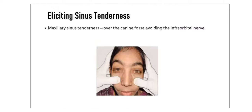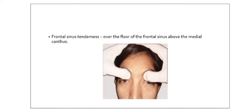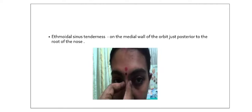In the palpation part, elicit sinus tenderness. For maxillary sinus, palpate over the canine fossa avoiding the infraorbital nerve. For frontal sinus tenderness, press over the floor of the frontal sinus above the medial canthus. For ethmoidal sinus tenderness, press on the medial wall of the orbit just posterior to the root of the nose.